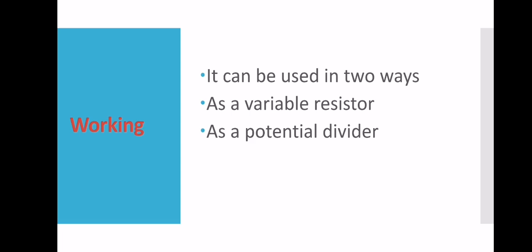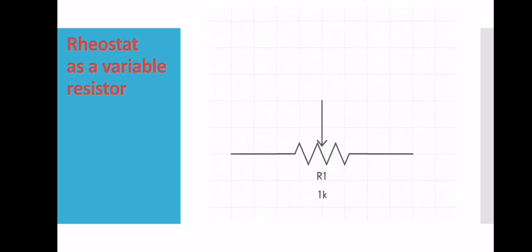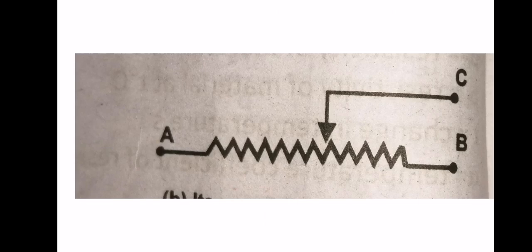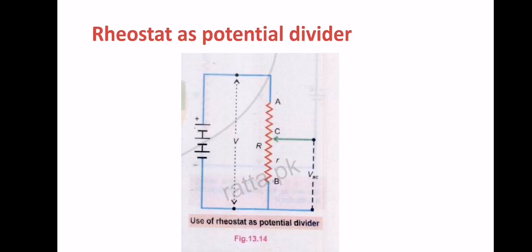A rheostat can be used as a variable resistor and it can be used as a potential divider. As a variable resistor: A and B are the fixed terminals and C is the sliding contact. As we move from A to B, the resistance of the wire increases. As we move the sliding contact from C to A, the resistance of the wire decreases. So the rheostat in that case is used as a variable resistor.